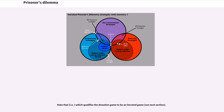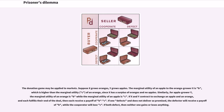The donation game may be applied to markets. Suppose X grows oranges and Y grows apples. The marginal utility of an apple to the orange grower X is B, which is higher than the marginal utility of an orange, since X has a surplus of oranges and no apples. Similarly, for apple grower Y, the marginal utility of an orange is B while the marginal utility of an apple is C. If X and Y contract to exchange an apple and an orange and each fulfills their end of the deal, then each receives a payoff of B − C. If one defects and does not deliver as promised, the defector will receive a payoff of B, while the cooperator will lose C. If both defect, then neither one gains or loses anything.